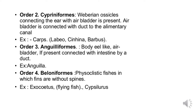Examples of Cypriniformes also include Labeobarbus and Barbus species. Order 3 is Anguilliformes: body is long, narrow and pointed. If an air bladder is present, it is connected to the intestine by a duct.